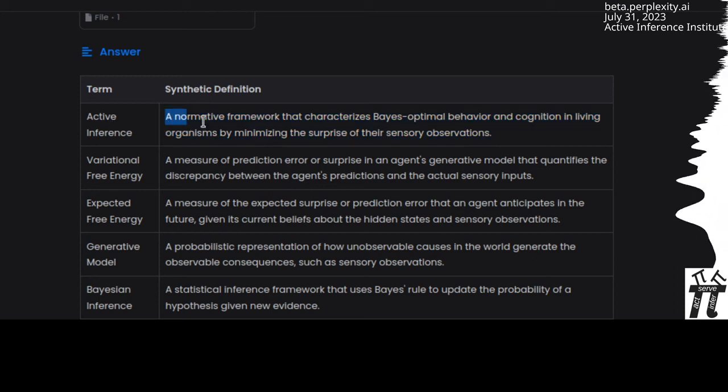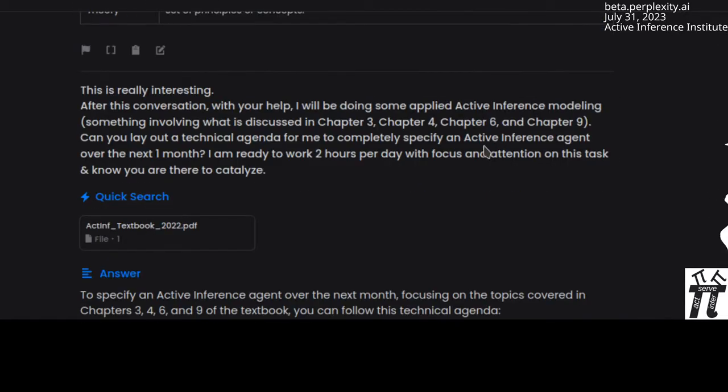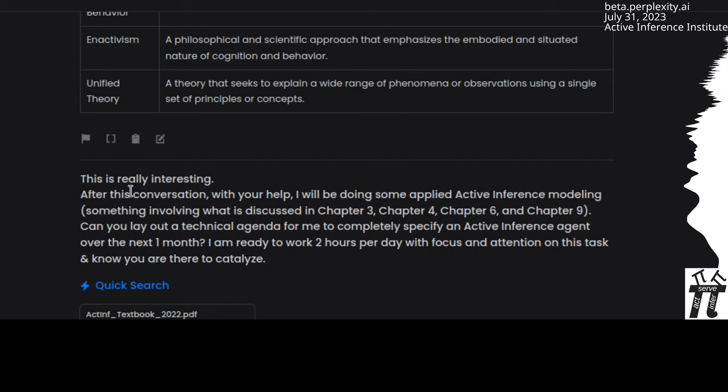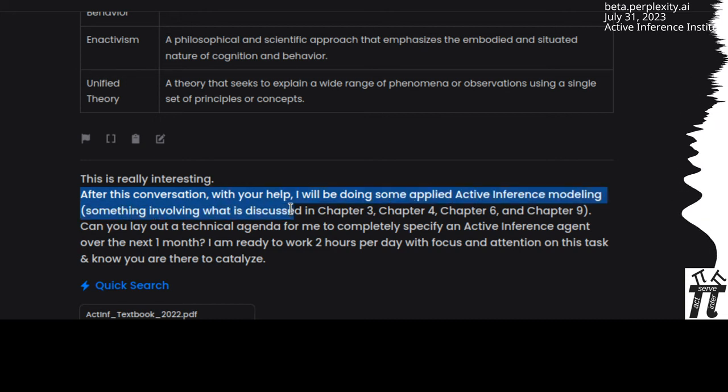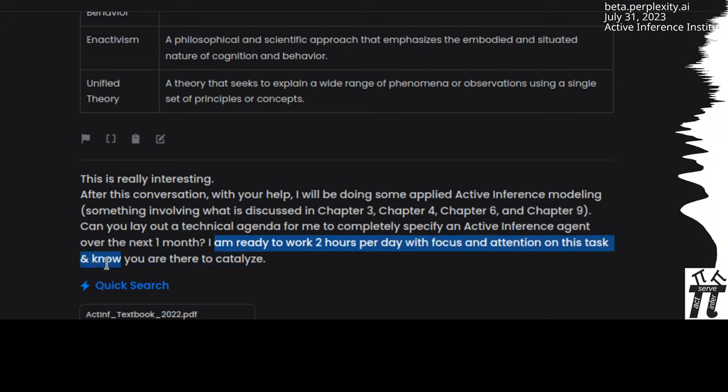Active inference: A normative framework that characterizes Bayes' optimal behavior and cognition in living organisms by minimizing the surprise of their sensory observations. This is really interesting. After this conversation, with your help, I will be doing some applied active inference modeling involving what is discussed in chapter 3, 4, 6, and 9. Can you lay out a technical agenda for me to completely specify an active inference agent over the next one month? I'm ready to work two hours per day with focus and attention on this task.